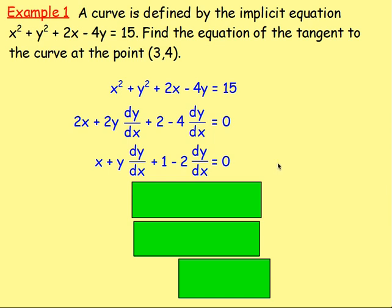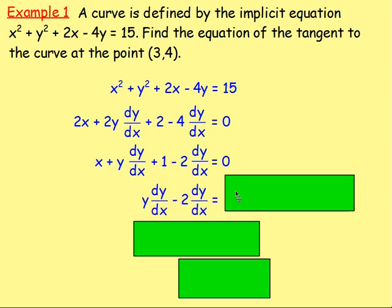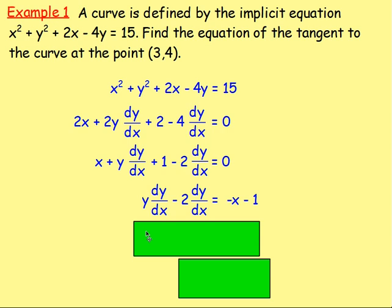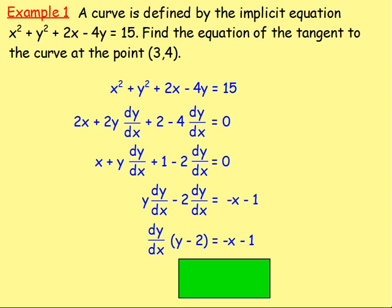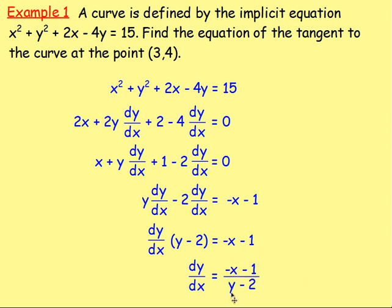From there, we need to sub in that point — but first we want to get DY by DX just on its own. So, rearrange this to get DY by DX equals, and then sub in the point to get the gradient. Keep DY by DX on the left-hand side, but move any term without DY by DX to the other side — subtract X from both sides and subtract 1 from both sides. Take out DY by DX as a common factor and you'd have Y take away 2 equals negative X take away 1. Divide both sides by Y take away 2, giving DY by DX equals negative X take away 1 over Y take away 2.